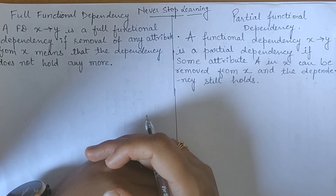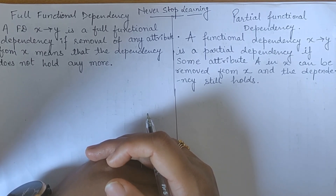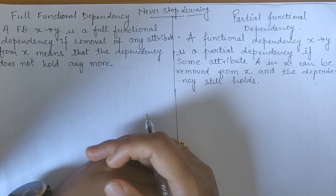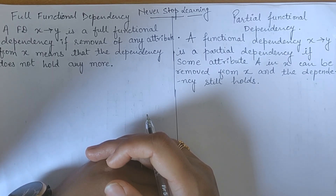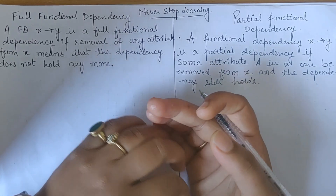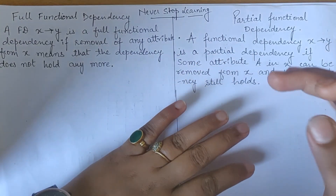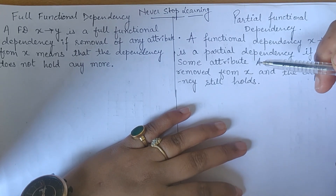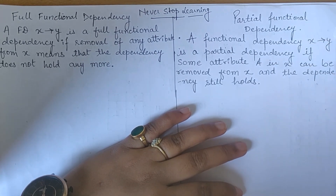Hello everyone. In this series on learning database management systems, today we are going to see full functional dependency and partial functional dependency. In the previous series we have already discussed what is functional dependency, what is trivial and non-trivial functional dependency, and how to calculate the closure of an attribute. So here we are going to do full functional dependency and partial functional dependency.